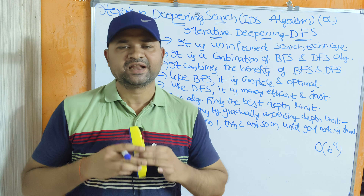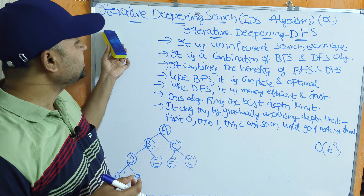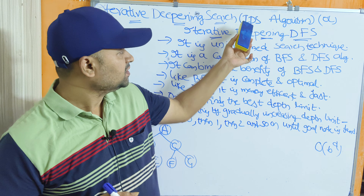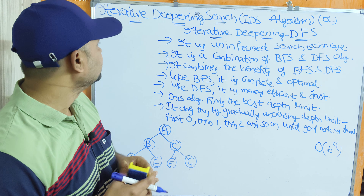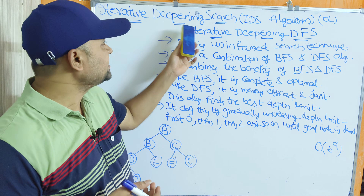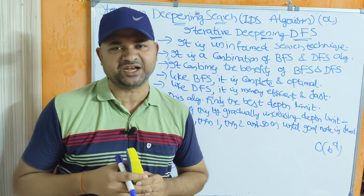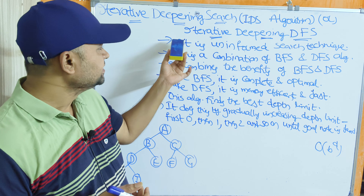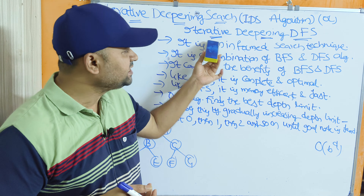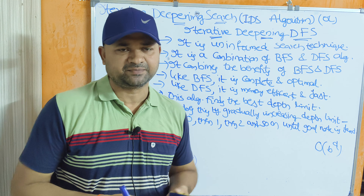Let us discuss iterative deepening search, or IDS for short. I stands for iterative, D stands for deepening, S stands for search algorithm. This can also be called iterative deepening depth-first search algorithm.